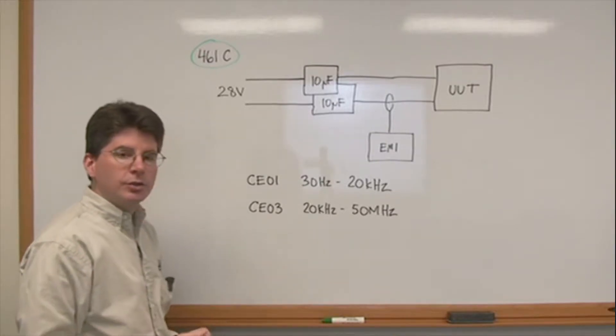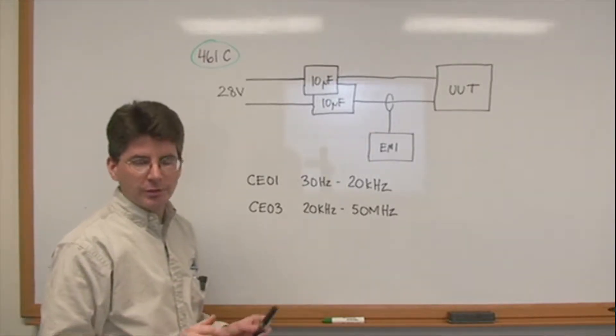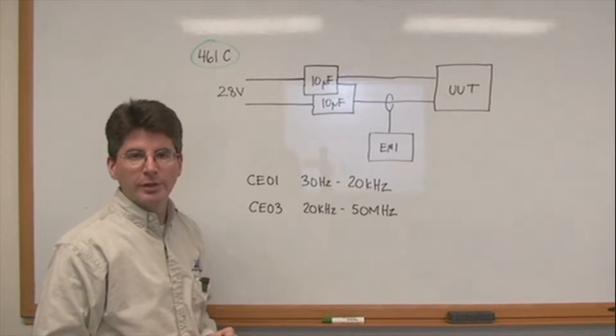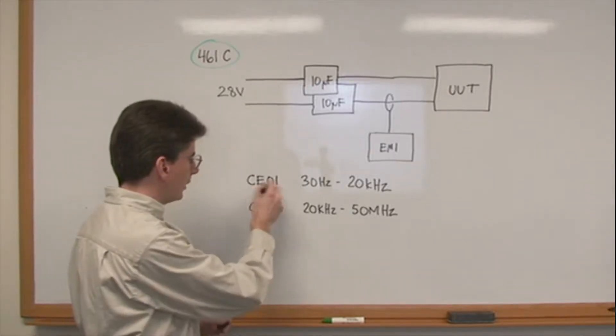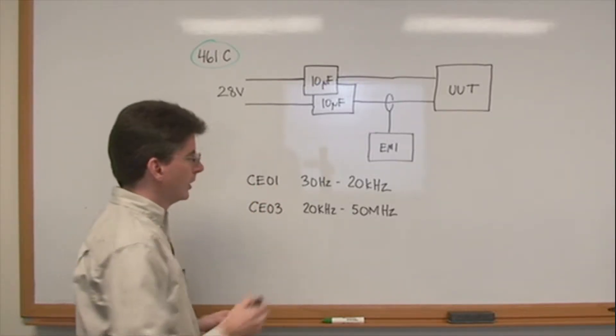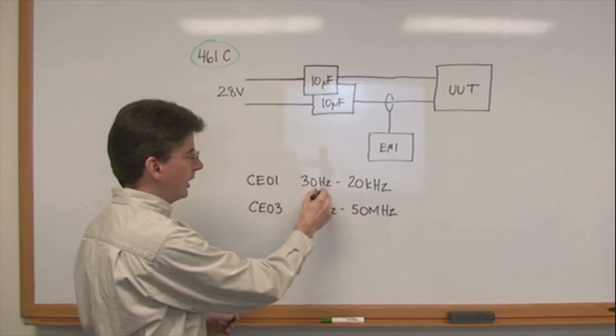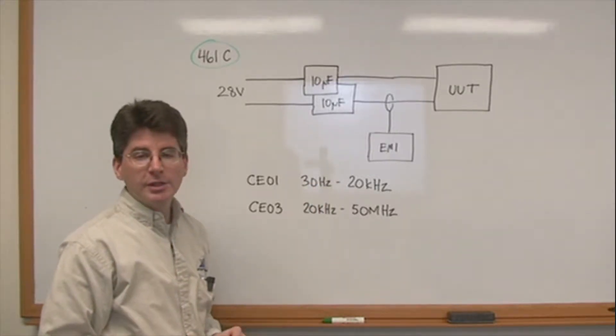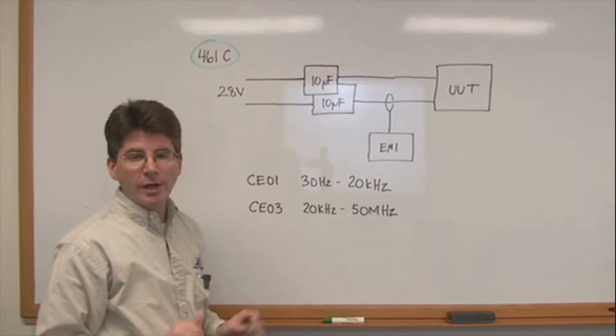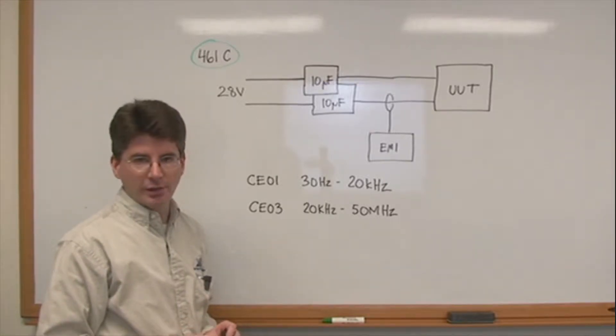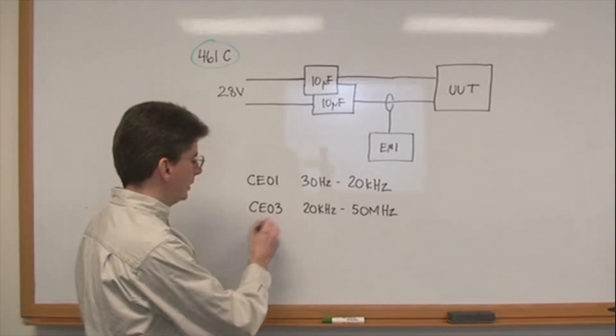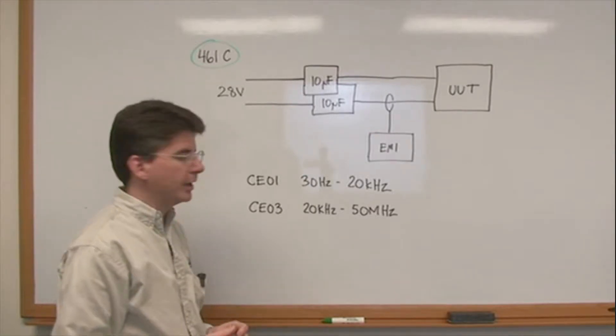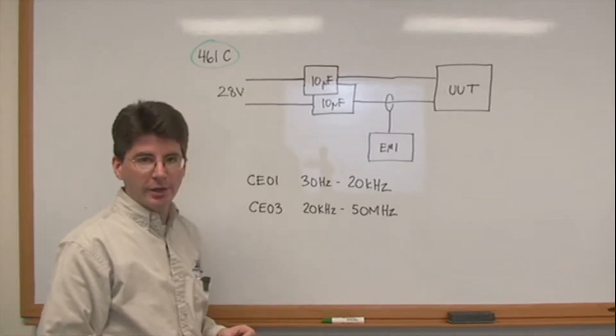There are two conducted emissions requirements in 461C which are relevant to power converters. The first is CE01, which is in the frequency band 30 hertz to 20 kilohertz. VPT's DC-DC converters do not emit any noise in this range. The second is CE03, which is in the range of 20 kilohertz to 50 megahertz. This is where we will primarily be concerned.